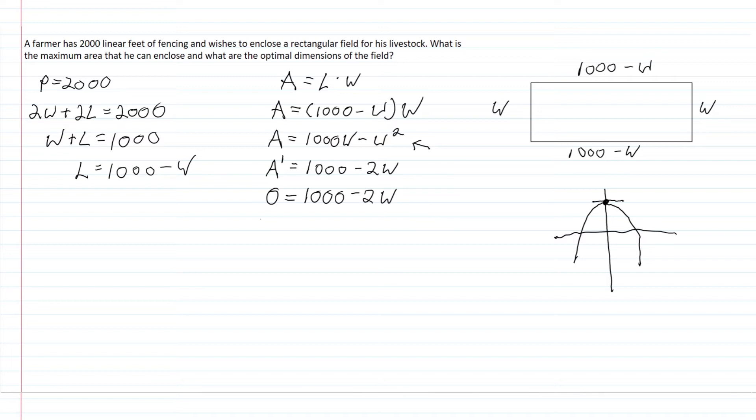So we set 1,000 minus 2W equals 0, add 2W to both sides, and find that our optimal width is 500.